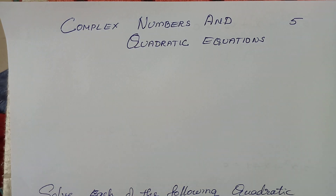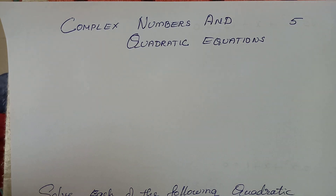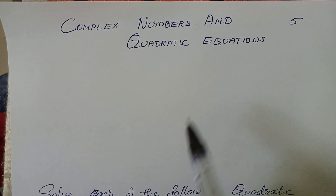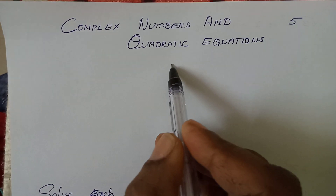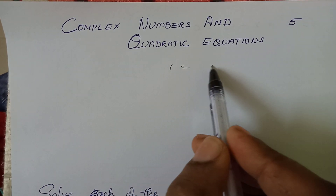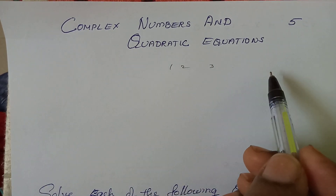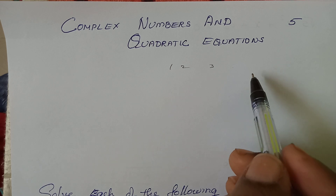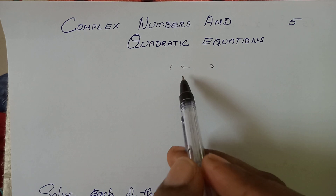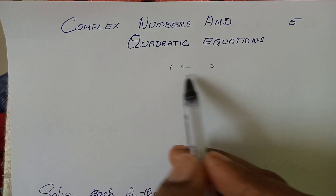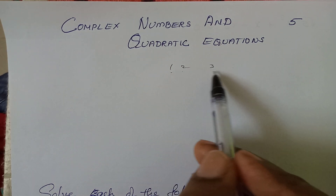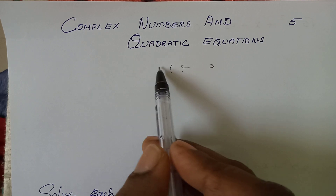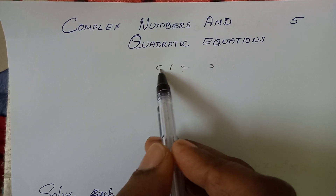What are Complex Numbers? Let's start with counting numbers. Counting numbers are 1, 2, 3. Then there are whole numbers. This is why we have natural numbers. Whole numbers include 0.